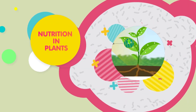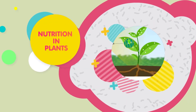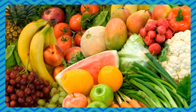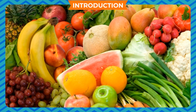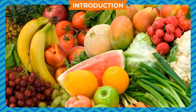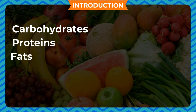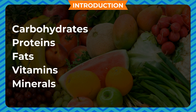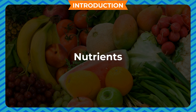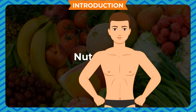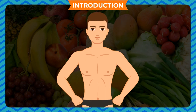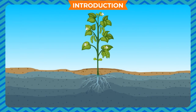Nutrition in plants — introduction. Food is essential for all living organisms. Carbohydrates, proteins, fats, vitamins, and minerals are the main components of food. These are called nutrients. Nutrients are required for body-building, growth, and recovery of damaged muscles.